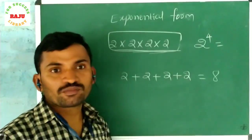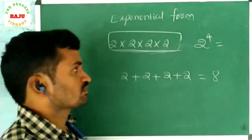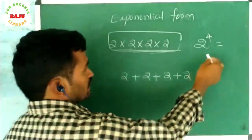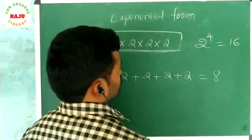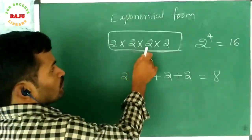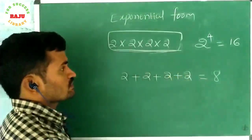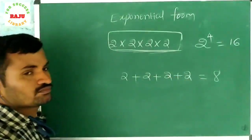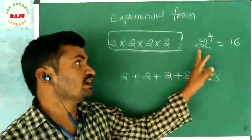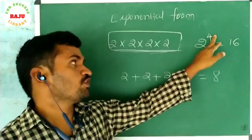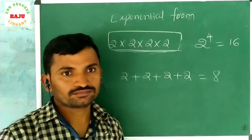Two raised to the power of four means sixteen, because two times two is four, four times two is eight, eight times two is sixteen. So two to the power four is called exponential form.